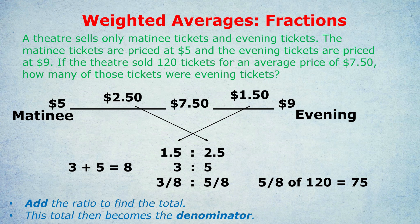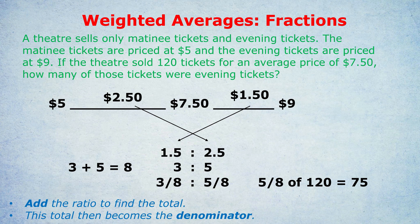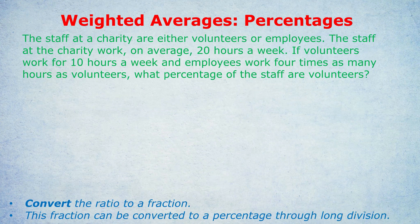Incredible trick — one of my favourites. We're going to finish off with two more examples. The first one is what to do if they ask for a percentage, and the second one is a harder one where you have to focus on the middle number even harder because there will be multiple variables. Both of these topics could easily come up in the GRE and the GMAT. The staff at a charity are either volunteers or employees. The staff work, on average, 20 hours a week. If volunteers work for 10 hours a week and employees work four times as many hours as volunteers, what percentage of the staff are volunteers?